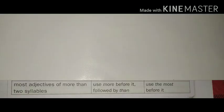The fifth rule is for most adjectives of more than two syllables. If the word is made of two parts that can be split up, it should be preceded by more in the comparative degree and most in the superlative degree. Also, more in the comparative degree should be followed by than in a sentence.